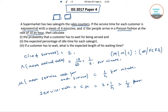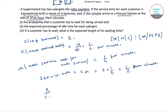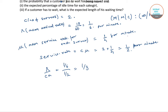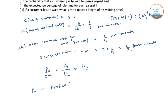So lambda divided by C mu equals 1 by 6 divided by 1 by 2, which is equals to 1 by 3. So lambda by C mu is equals to 1 by 3.